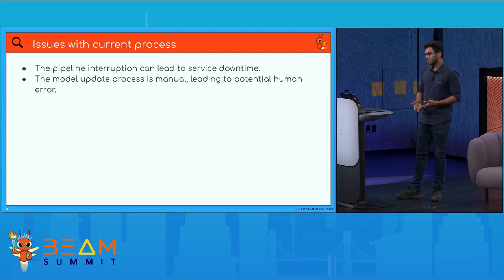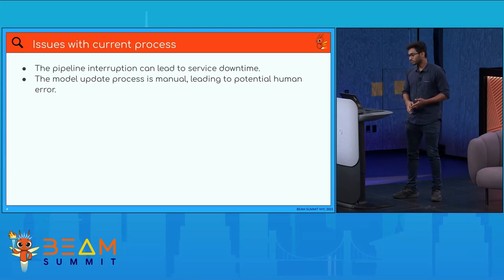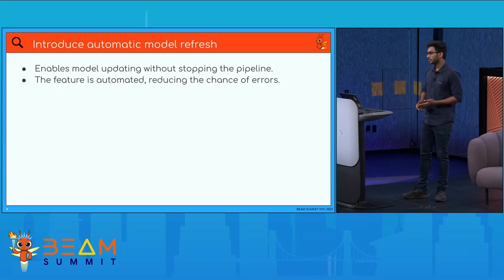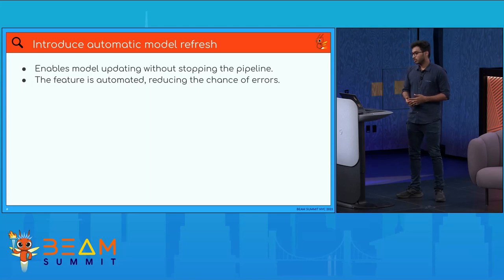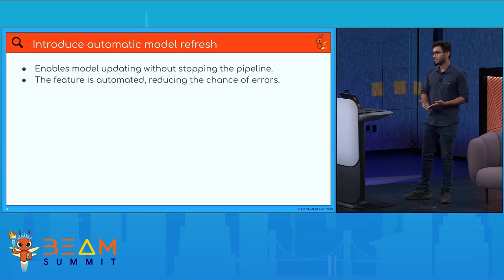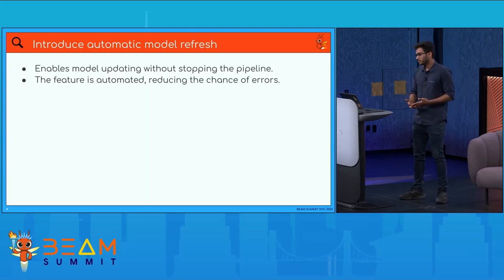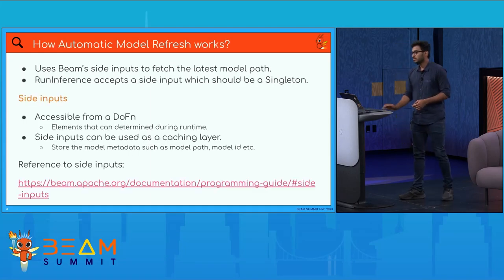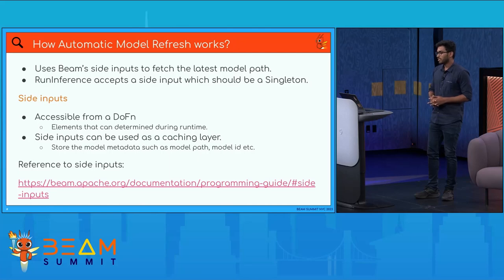The issues with this process are that it can lead to service downtime, the model update process is manual, and it can lead to potential human error. To avoid this, we introduce automatic model refresh, which enables updating models in run inference without stopping the pipeline. This is automated — if you follow certain semantics, the model will get updated in run inference.